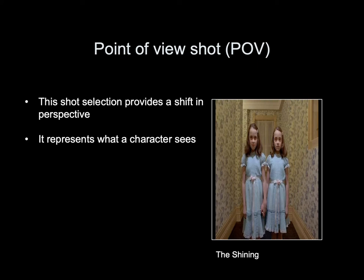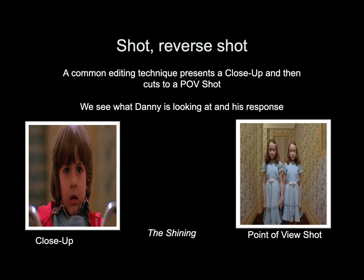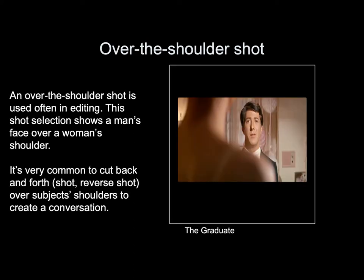A point of view shot, or POV shot, provides a shift in perspective — it represents what the character sees. Looking at an image from The Shining, we can see a common editing technique called shot-reverse shot: we get a close-up of Danny's face, and then it cuts to a point of view shot showing what Danny is looking at and his response. An over-the-shoulder shot is also used often in editing, showing a subject's face over another's shoulder, and it is very common to cut back and forth over the subjects' shoulders to create a conversation.